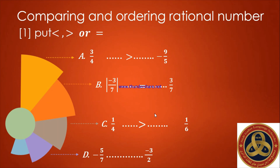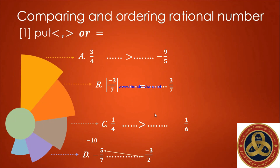Letter D: negative five over seven compared to negative three over two. The best way is the cross-multiplication method — multiply two by negative five to get negative ten, and multiply seven by negative three to get negative twenty-one. Comparing negative ten and negative twenty-one, negative ten is greater than negative twenty-one.